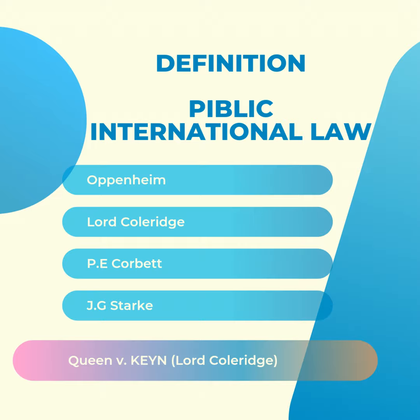Now we need to know why there was a change in this definition. The reasons for the emergence of new definitions can be grouped into three: first, the establishment of a large number of permanent international institutions or organizations; second, the protection of human rights and fundamental freedoms; and third, the creation of new rules for the punishment of persons committing international crimes. These reasons are reflected in J.G. Stark's modern definition.